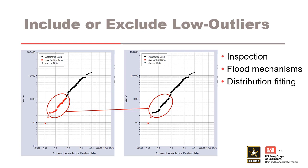Additionally, you should always run Bayesian estimation sensitivity tests with and without the outliers. Remember, one of the primary goals of the outlier test is to improve the fit of the upper right-hand curve. Running the sensitivities will help show if the final selection is missing the goal.